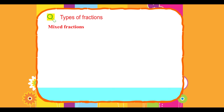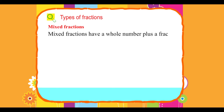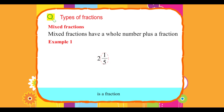Mixed fractions. Mixed fractions have a whole number plus a fraction. Example: 1 and 2 upon 5 — where 2 is the whole number and 1 upon 5 is the fraction.